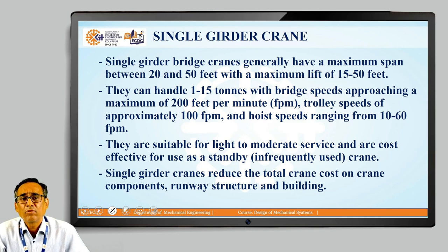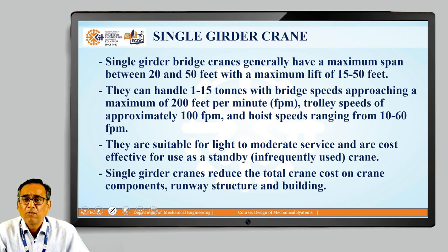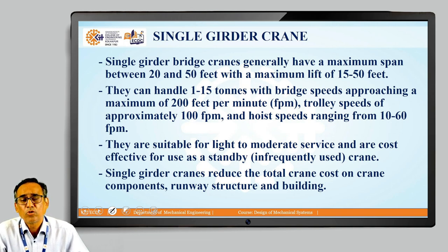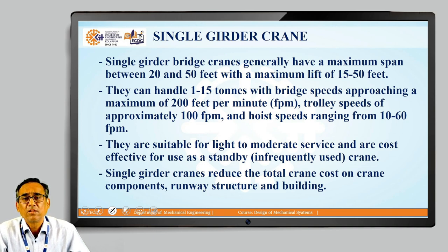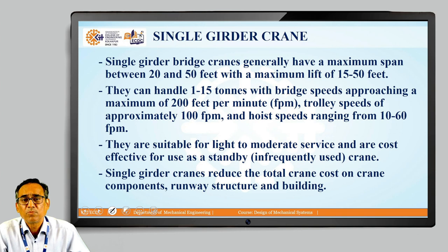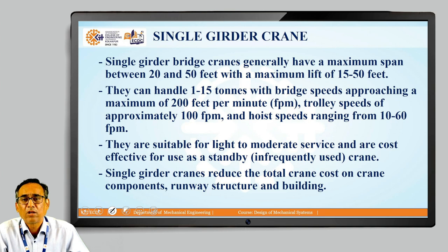In a single girder crane, we have a span of 20 to 50 feet with a maximum lift of 15 to 50 feet. They can handle 1 ton to 15 tons. In addition to loads, we also have to consider the speeds. The motion part is related to the different speeds of the crane components — there is a bridge speed, a trolley speed, and a hoist speed. For the single girder crane, the bridge speed is 200 feet per minute, the trolley speed is 100 feet per minute, and the hoist speed is 10 to 60 feet per minute.